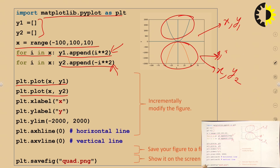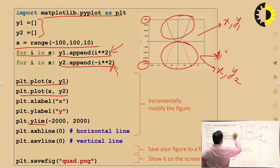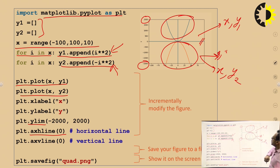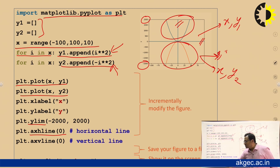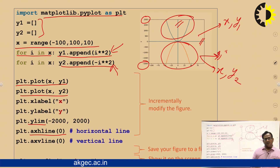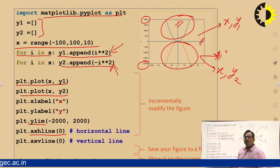We set labels, and ylim sets the limit from -2000 to 2000. If you want to set limits, use the ylim function. To draw lines: axhline draws a horizontal line, axv draws a vertical line. This horizontal and vertical line is drawn using these functions. To save the image, call savefig and give the image name with a .png extension - it saves in the current working directory. If you want to save elsewhere, provide the directory path.